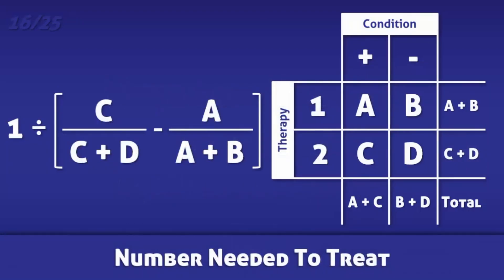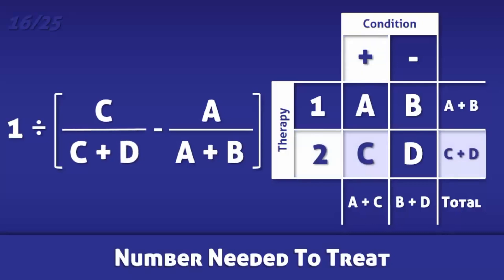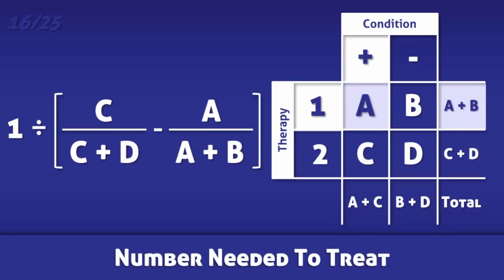The number needed to treat is the number of people that need to receive one therapy as opposed to another in order for there to be a decrease in morbidity in a single patient. It is the inverse of the absolute risk reduction and is calculated by dividing 1 by the difference in incidence of the condition in individuals who receive therapy 2 versus therapy 1.